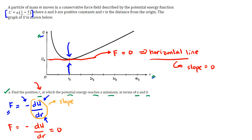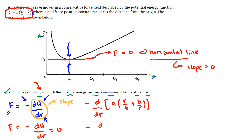Let's do that. We take the negative of the derivative of the potential energy function U equals A multiplied by the quantity R over B plus B over R. Rewriting this, we differentiate AR over B plus AB over R with respect to R and set the result equal to zero.